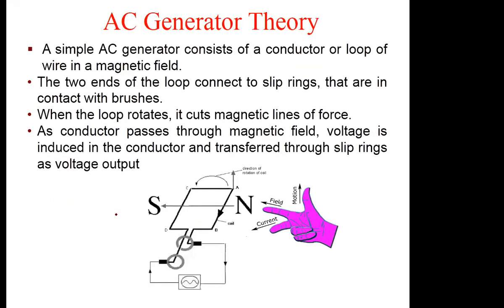For the AC generator theory, a simple AC generator consists of a conductor or a loop of wire in a magnetic field. The two ends of the loop connect to slip rings that are in contact with brushes — slip ring number one and slip ring number two, with one brush each. So from the illustration, the current will be flowing in a certain direction, making one terminal your positive and the other your negative at any given moment.